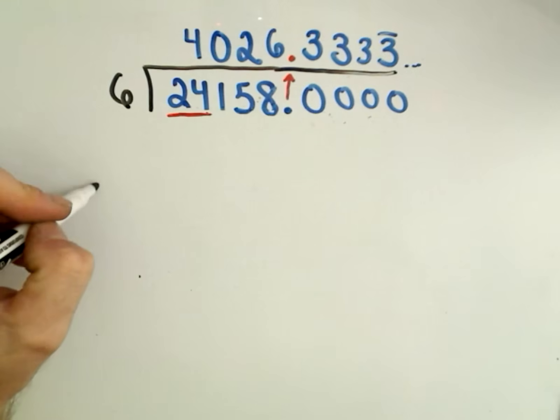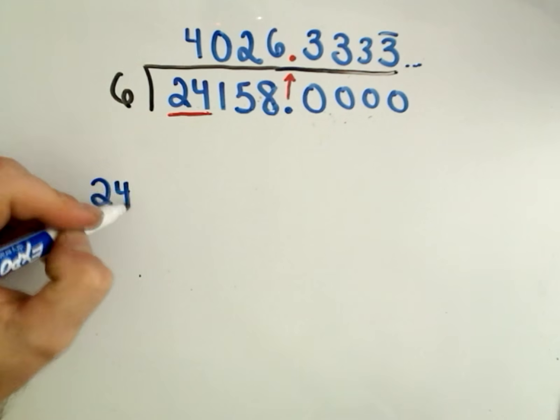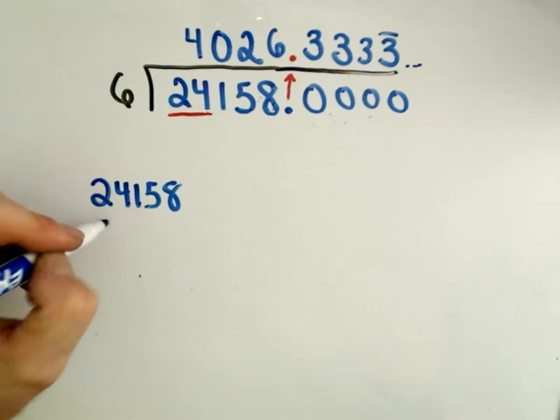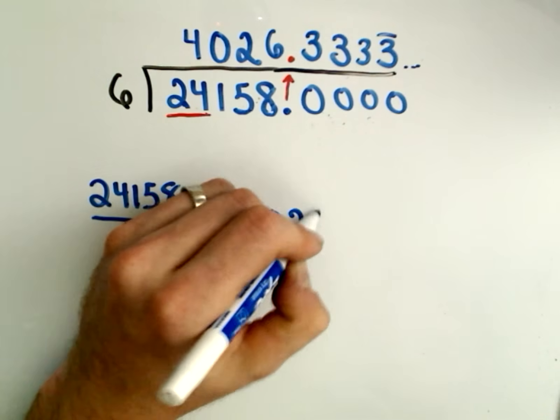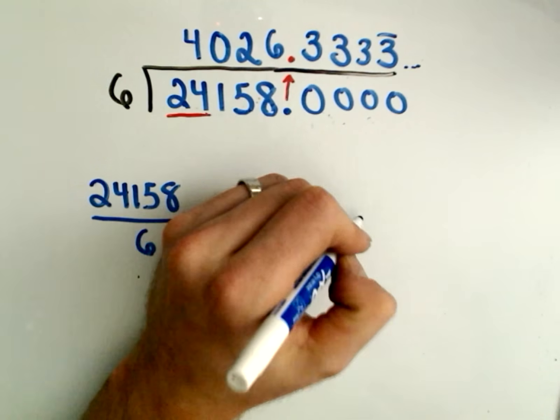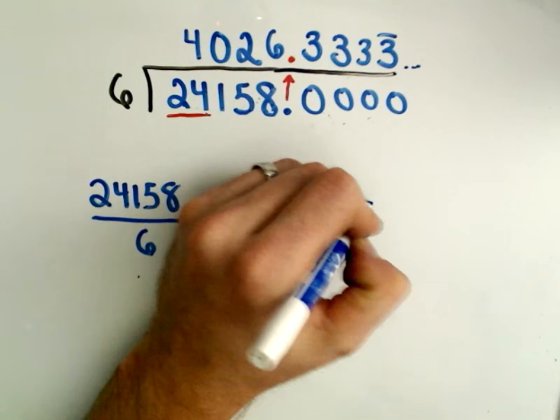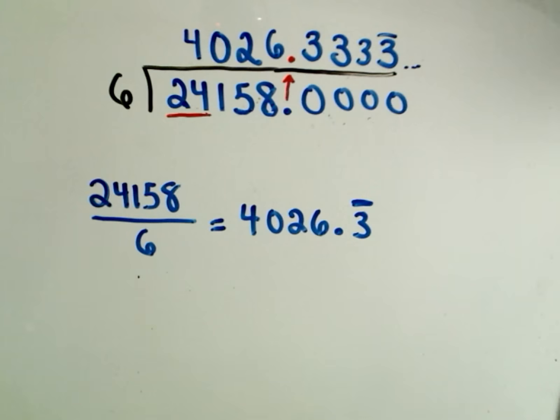Okay, so basically it says 24,158 divided by 6, we can now write that as the decimal 4,026 with 3 repeating forever, so 3, 3, 3, 3, 3, 3, 3.